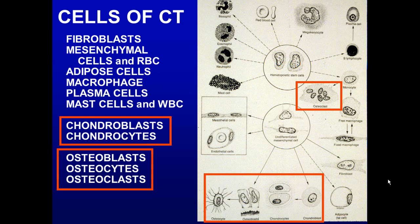Cartilage, bone, and all connective tissue come from progenitor cells located in the bone marrow. As far as cartilage and bone are concerned, there are five differentiated cells that come from those undifferentiated marrow cells. One is the osteoclast, derived from monocytes. One is the chondroblast, which gives rise to chondrocytes. And another is the osteoblast, which gives rise to the osteocyte. These five cells are derived from a precursor cell located in the bone marrow.